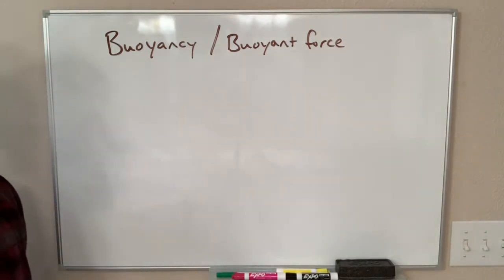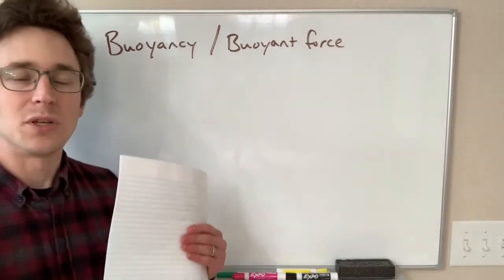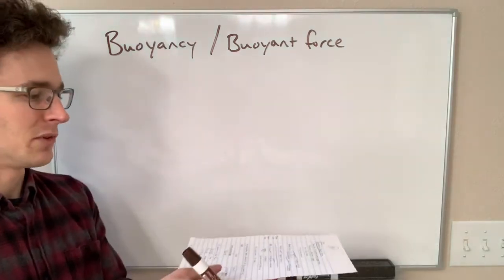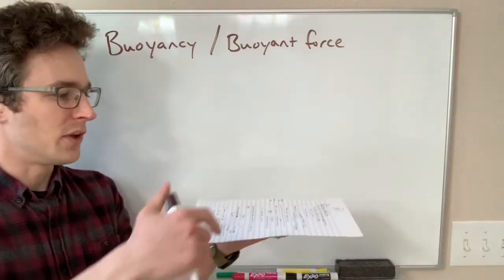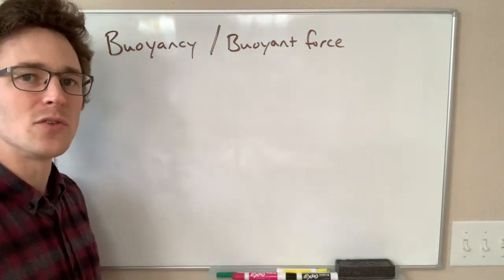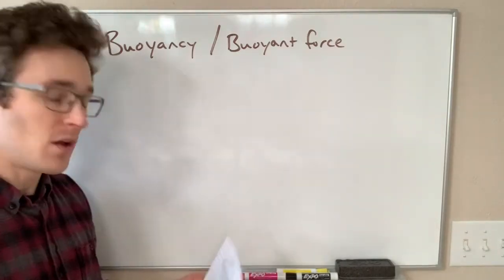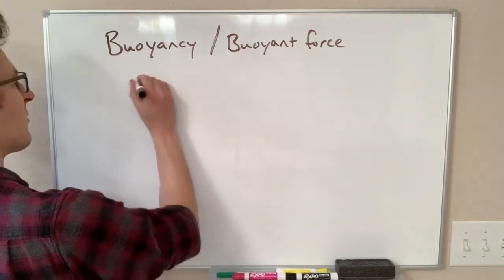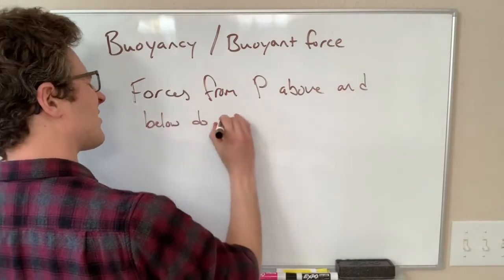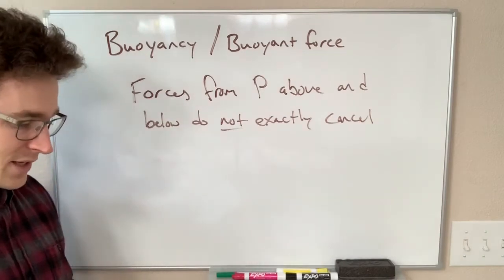The idea behind the buoyant force is this. We said last time that an object being pushed on by a fluid feels a force from that fluid. In the example of my paper, it felt a force from the air pressure from above and a force from the air pressure from below, and I said those two forces exactly canceled out and gave us no net force. It turns out that is not exactly right — these forces from above and below do not exactly cancel out.